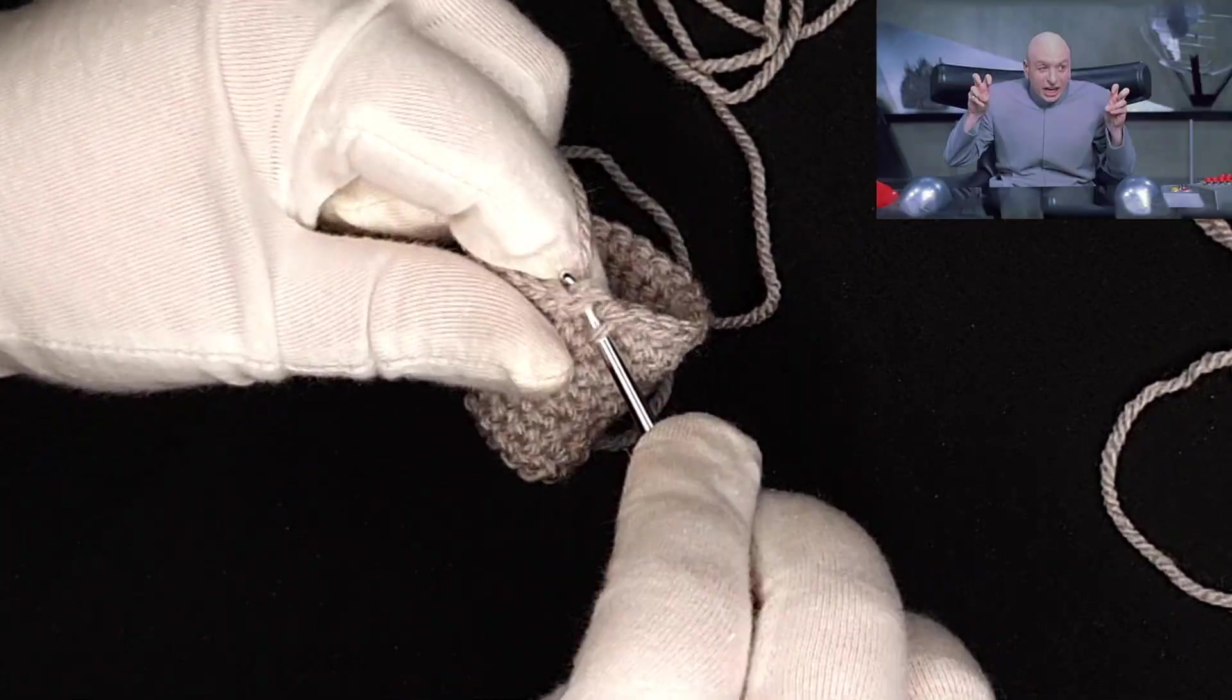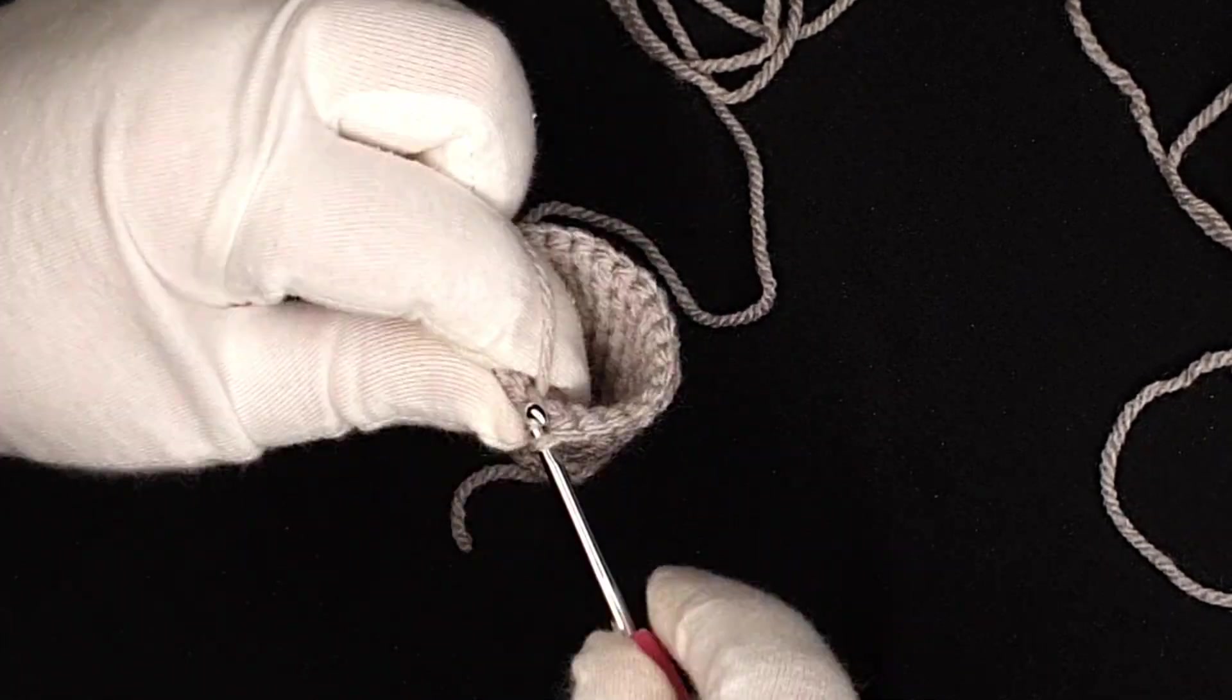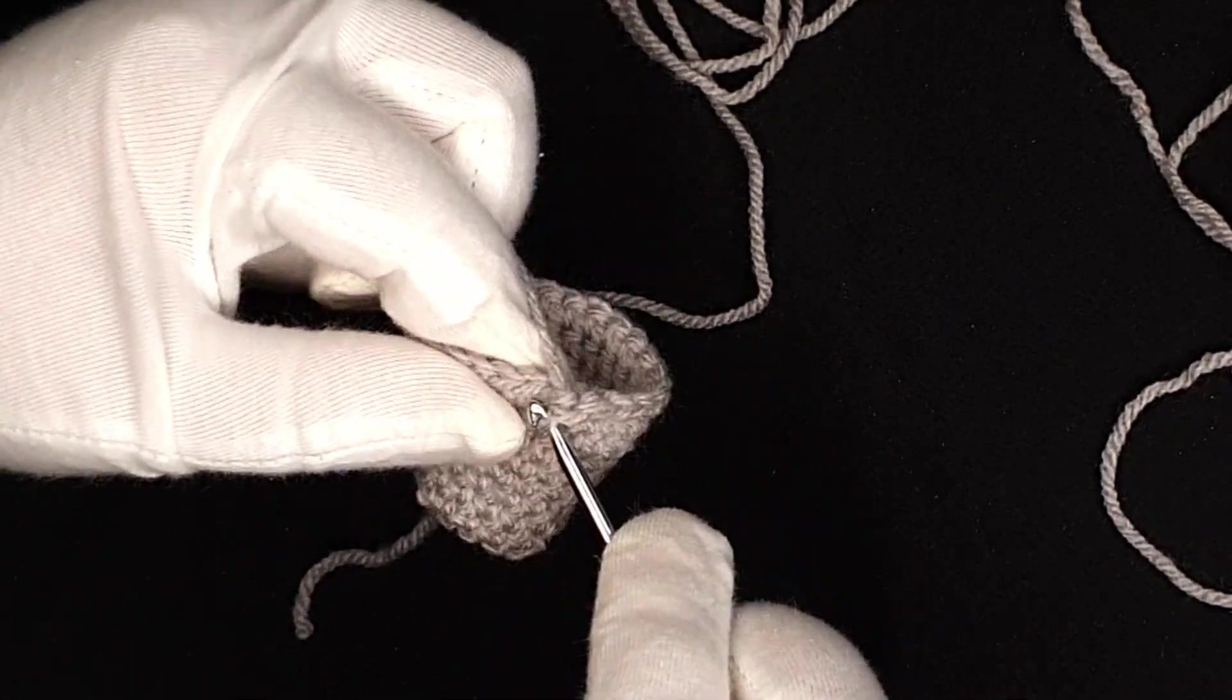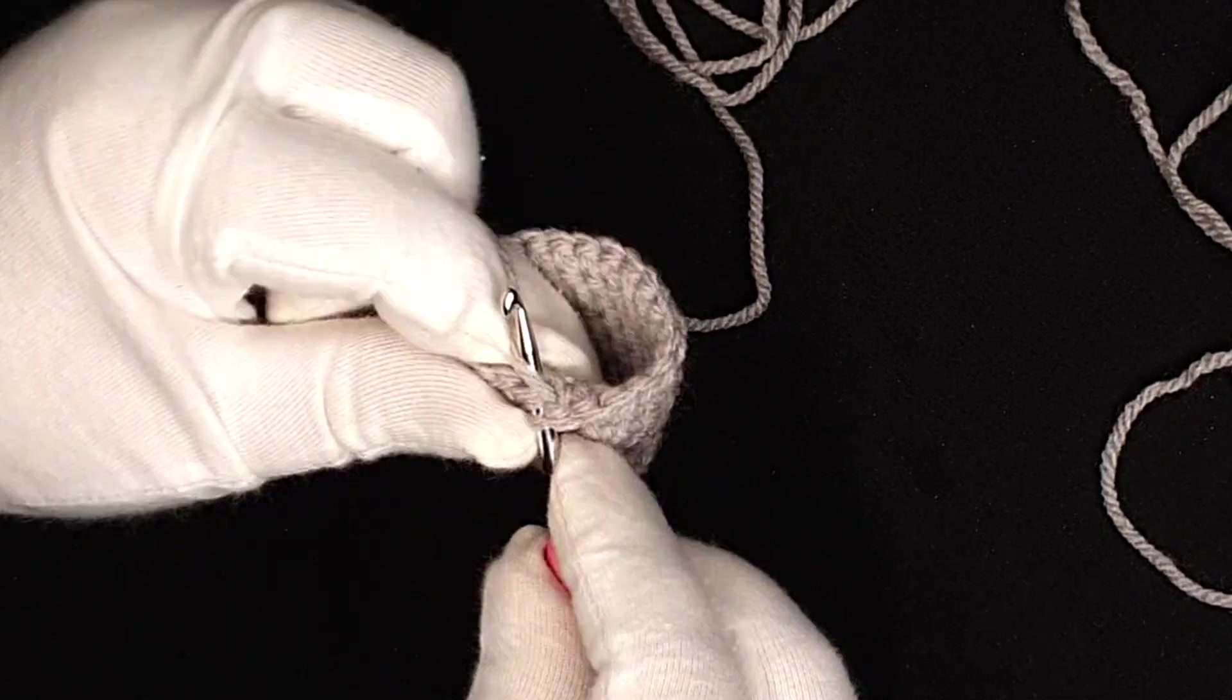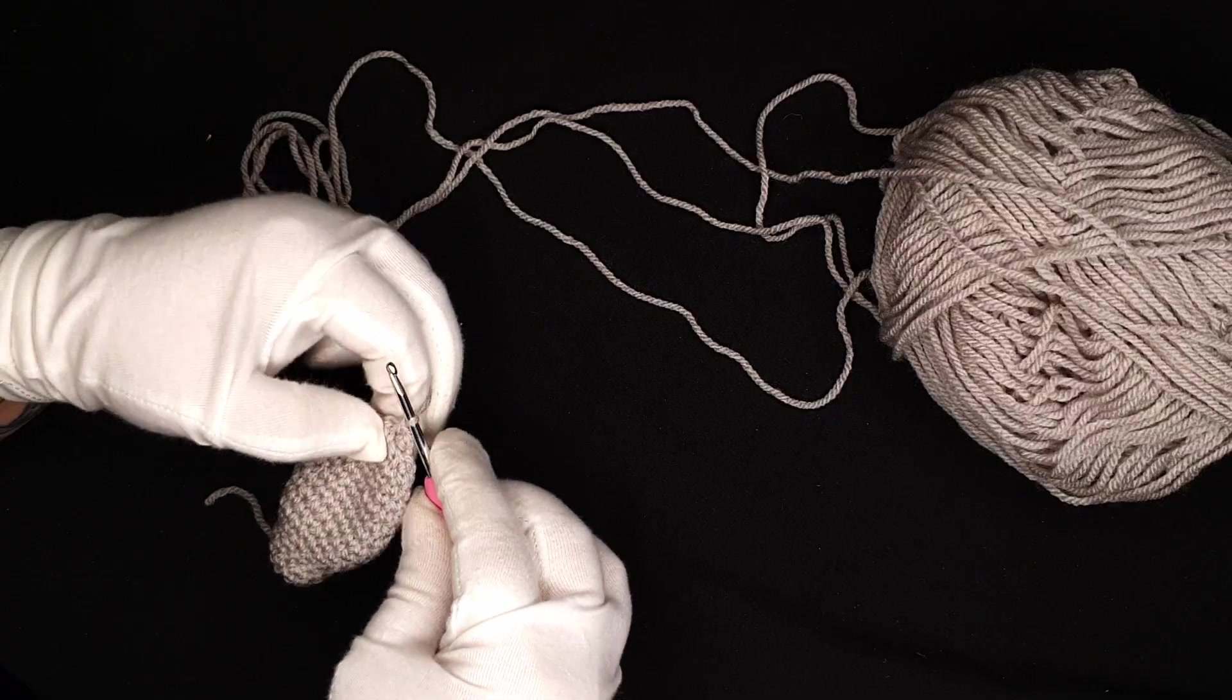The increases are exactly the same as the tummy increases, except I only increased twice and then decreased in the same way as well. Later on I will stuff the arms and crochet up the hole so then the whole arm is kind of self-contained, and then we can pin it in place and sew it on.